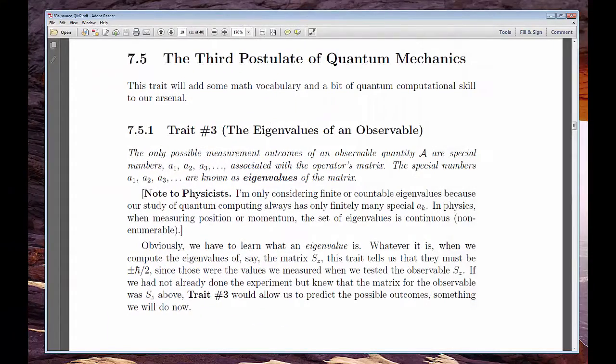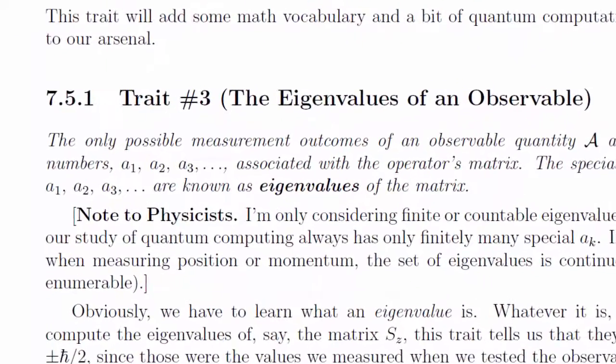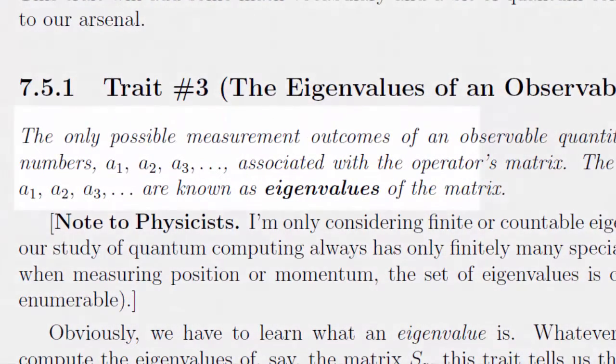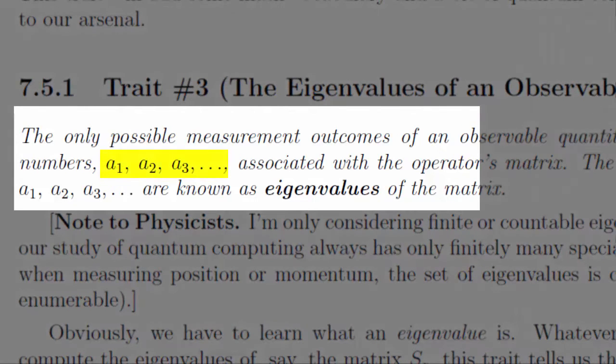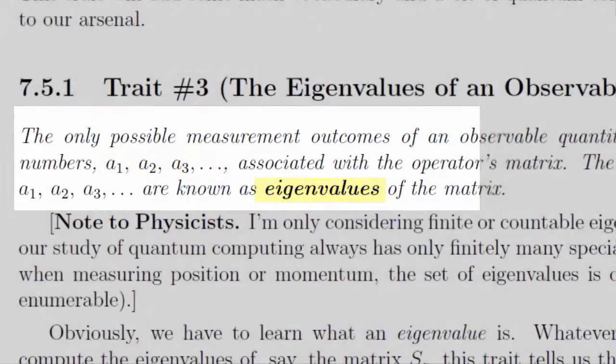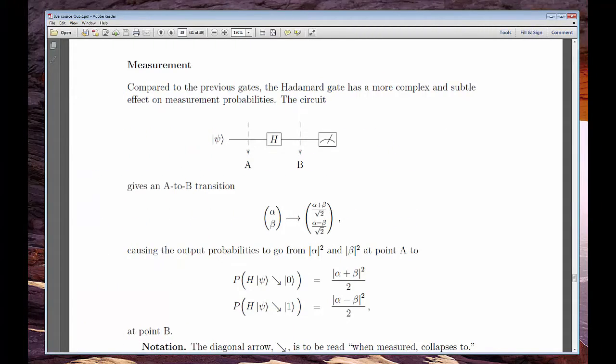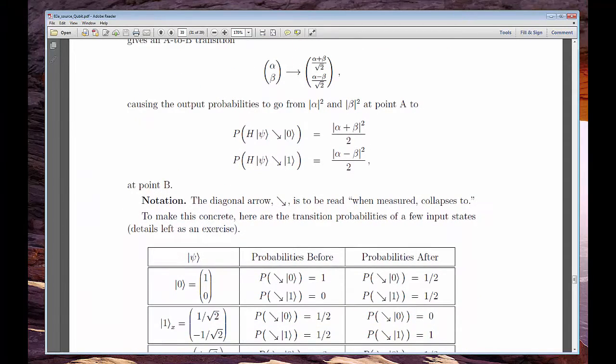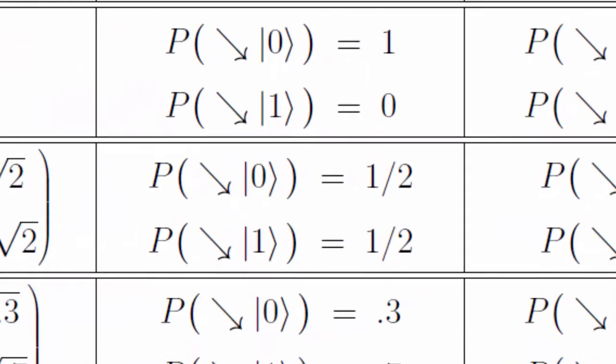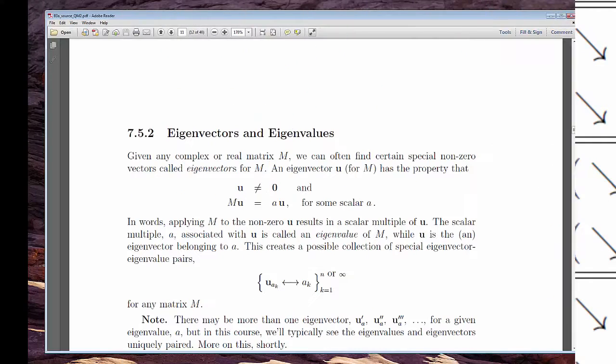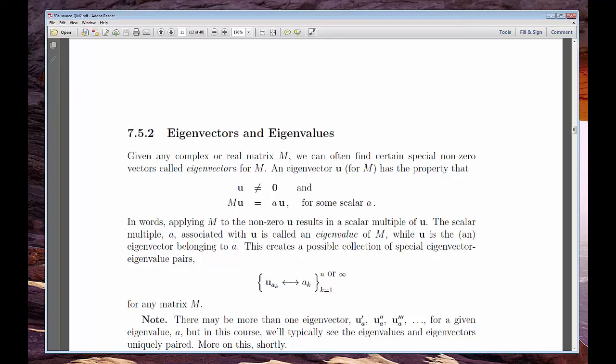The third postulate of quantum mechanics says that if we try to look at, or measure, the state of a system, we can only get a very limited number of possible results that go by the unnecessarily scary-sounding name, eigenvalues. It gets even more interesting. Before we measure anything, the state could be any one of the billions of possible Hilbert space state vectors. But if we so much as look at it, it always collapses to a basis vector. More vocabulary: basis vectors in physics are called eigenvectors.